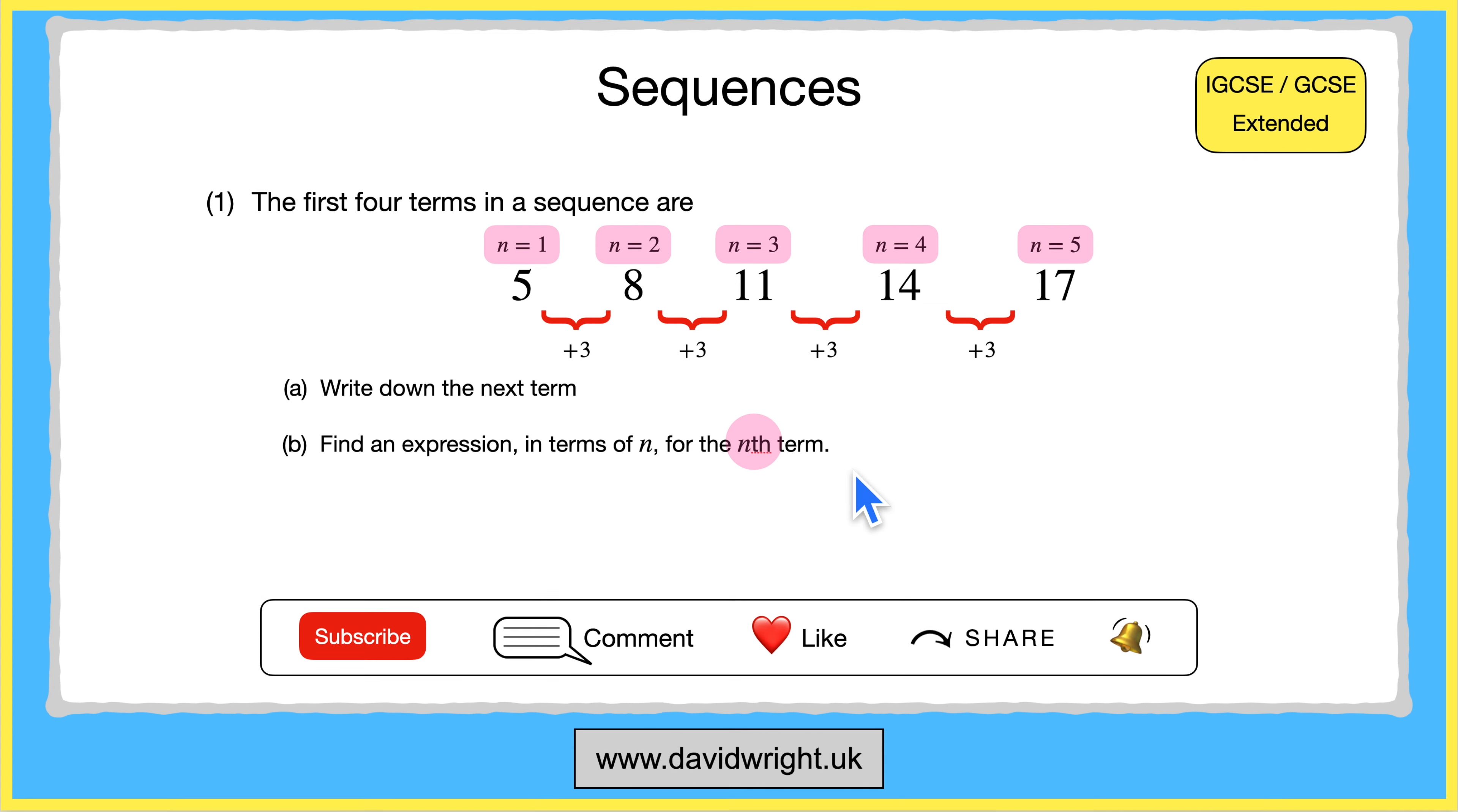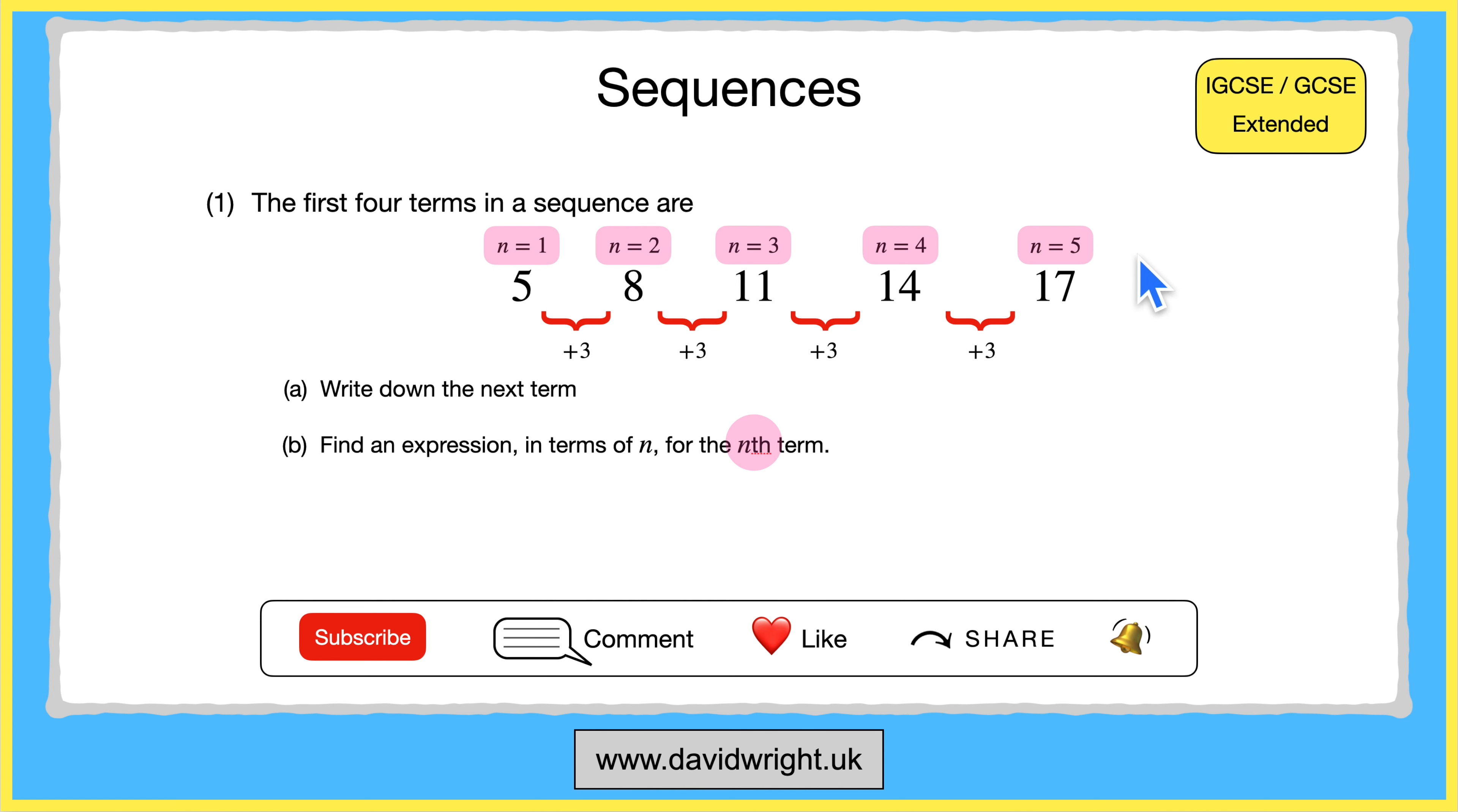So n could be 10 for example which means the 10th number in the sequence or 61 which means the 61st number in the sequence and so on. So what part B is asking us to do is find an algebraic expression that would enable us to calculate the number we would get at any position in the sequence.